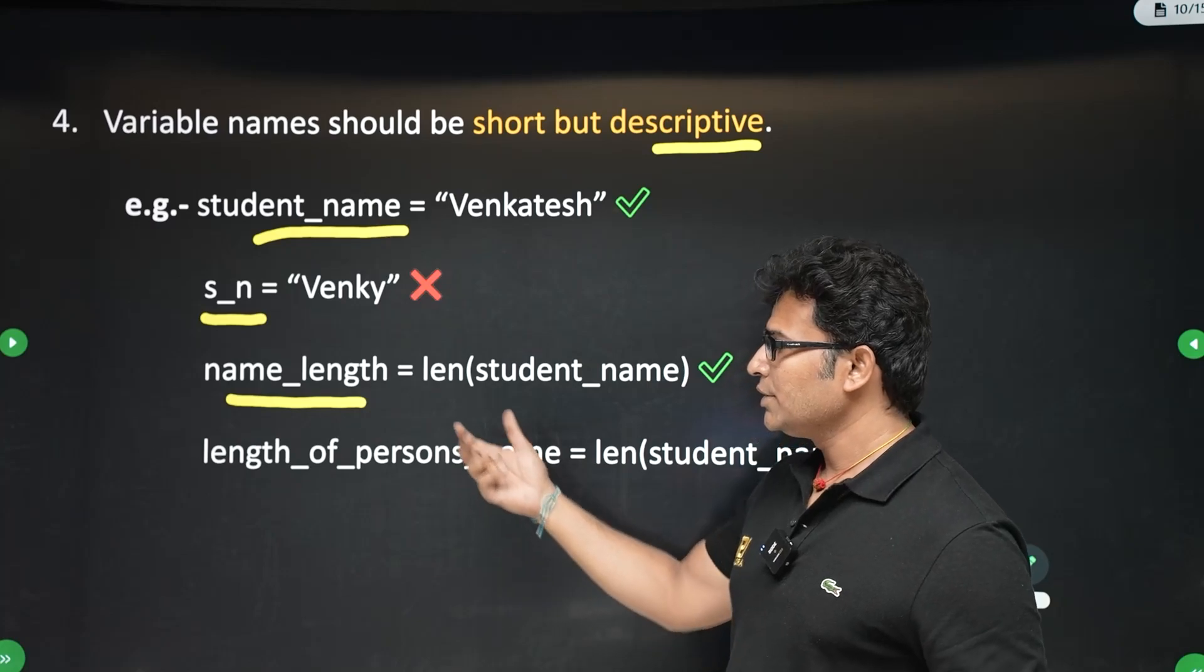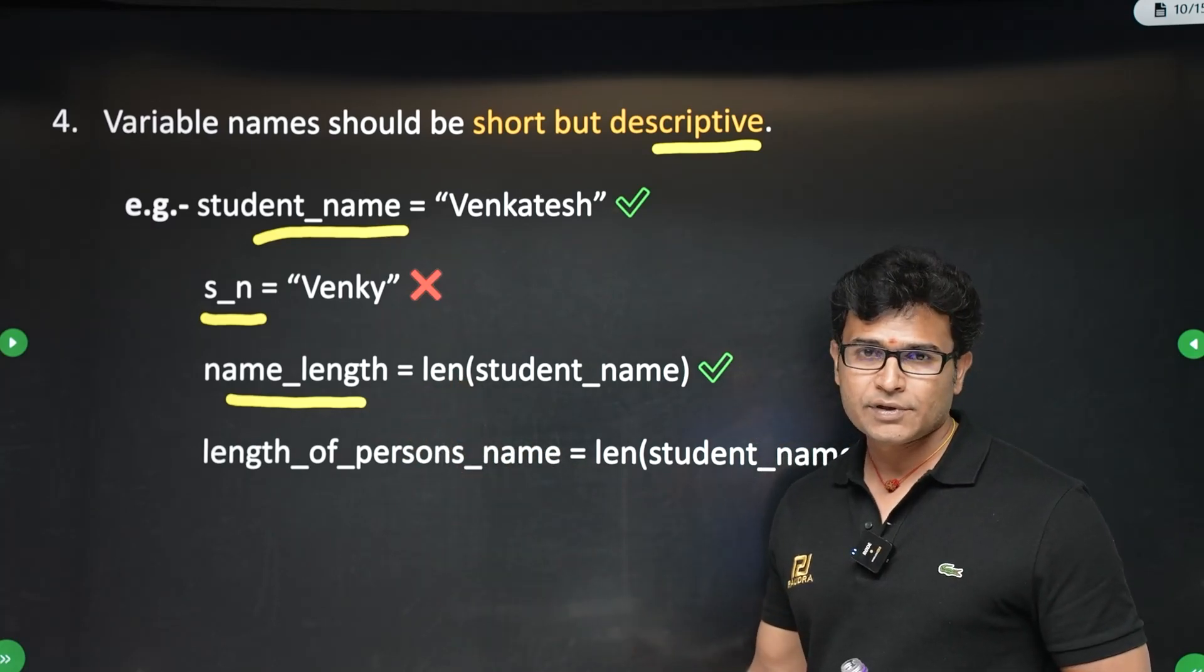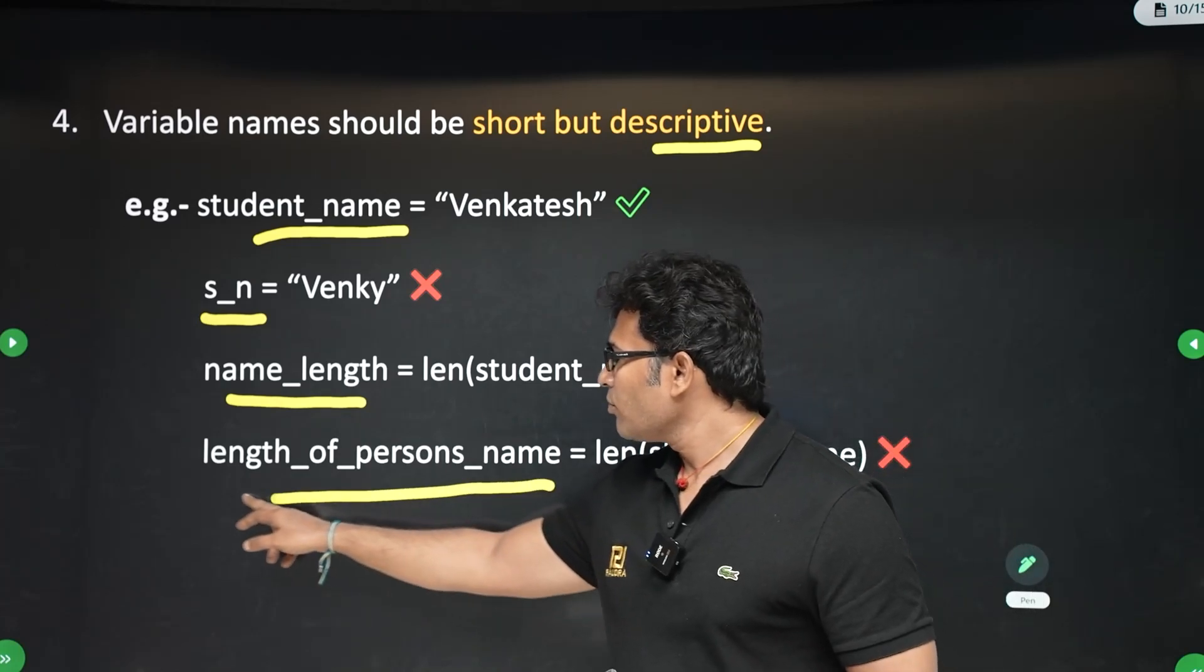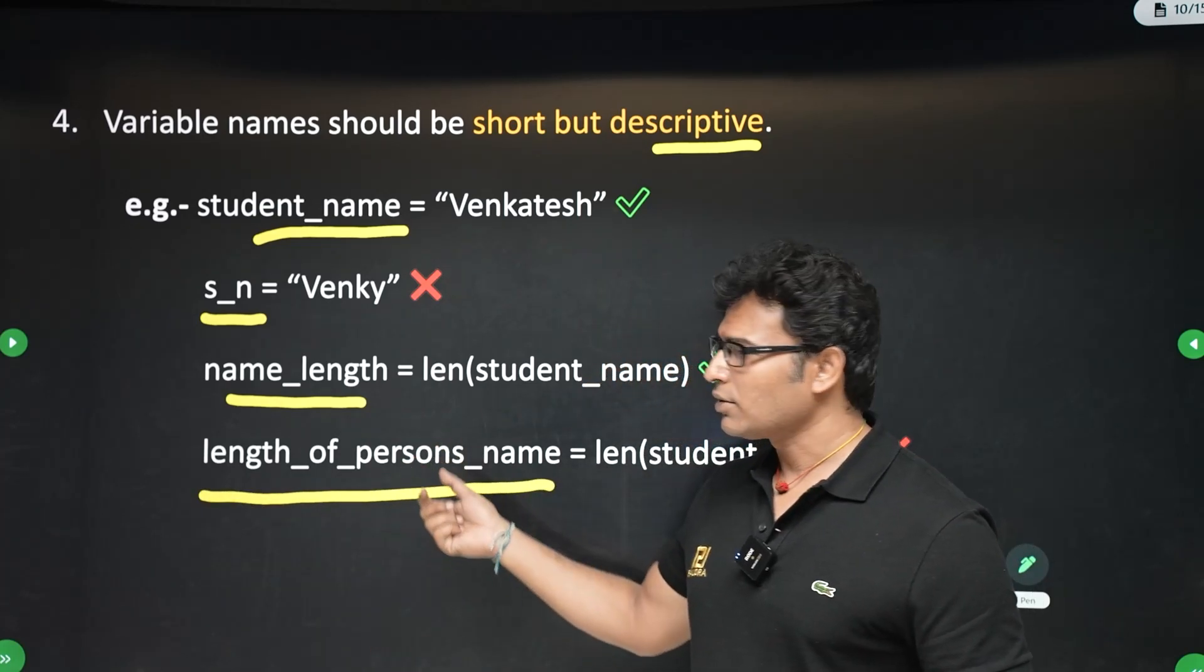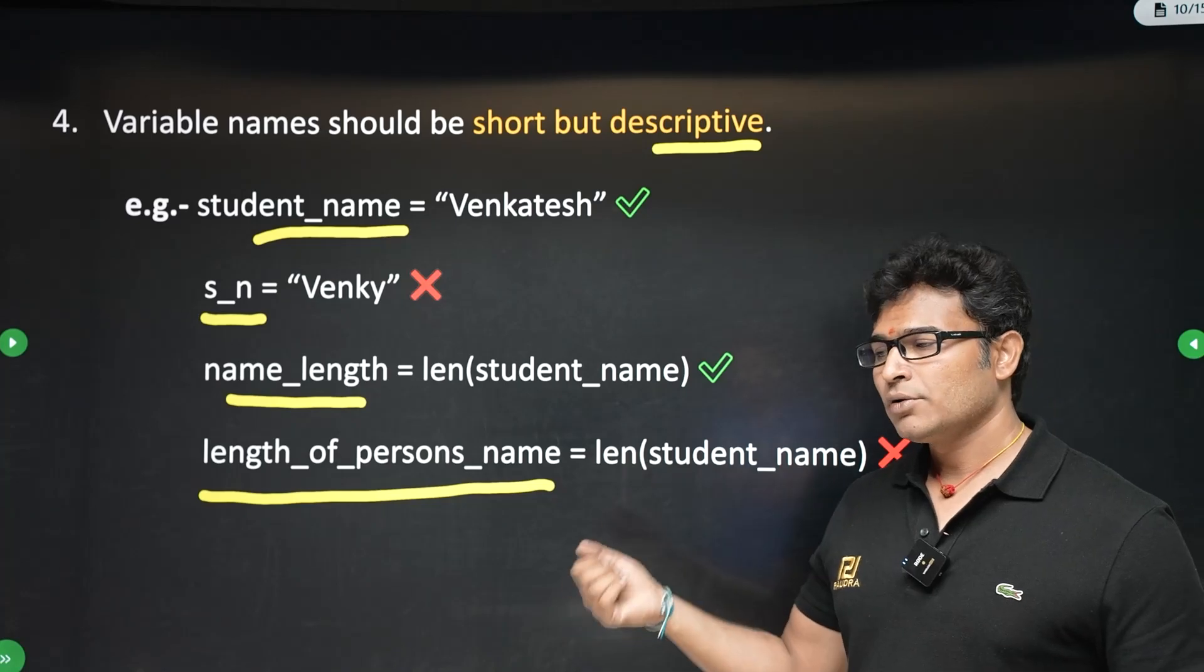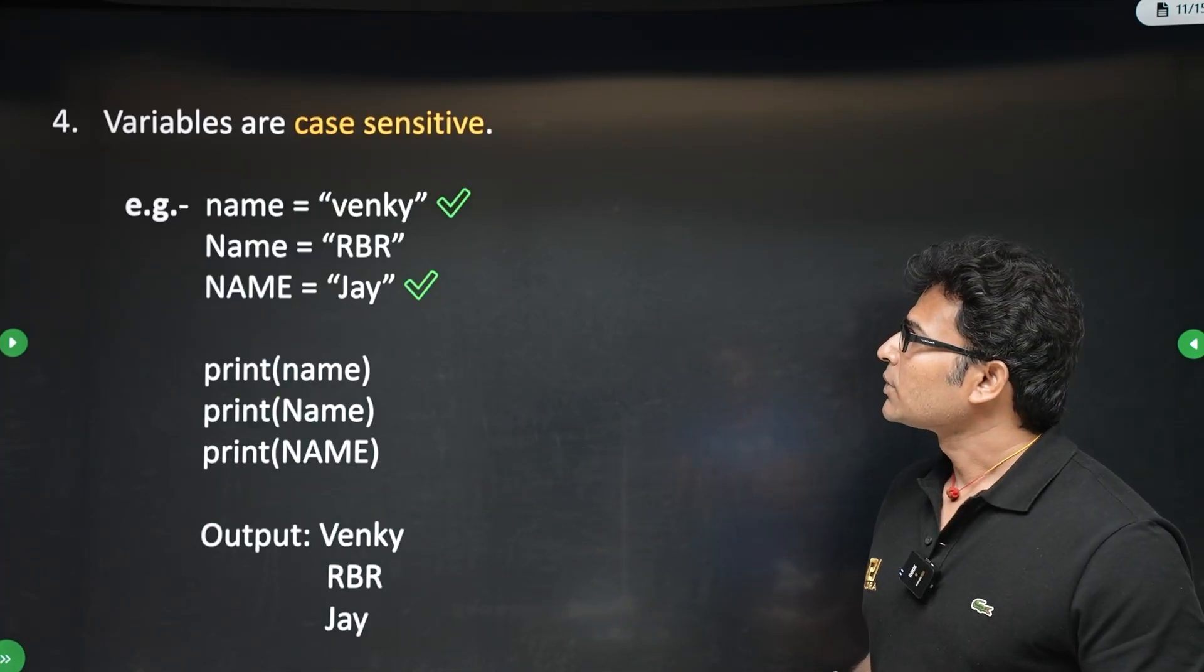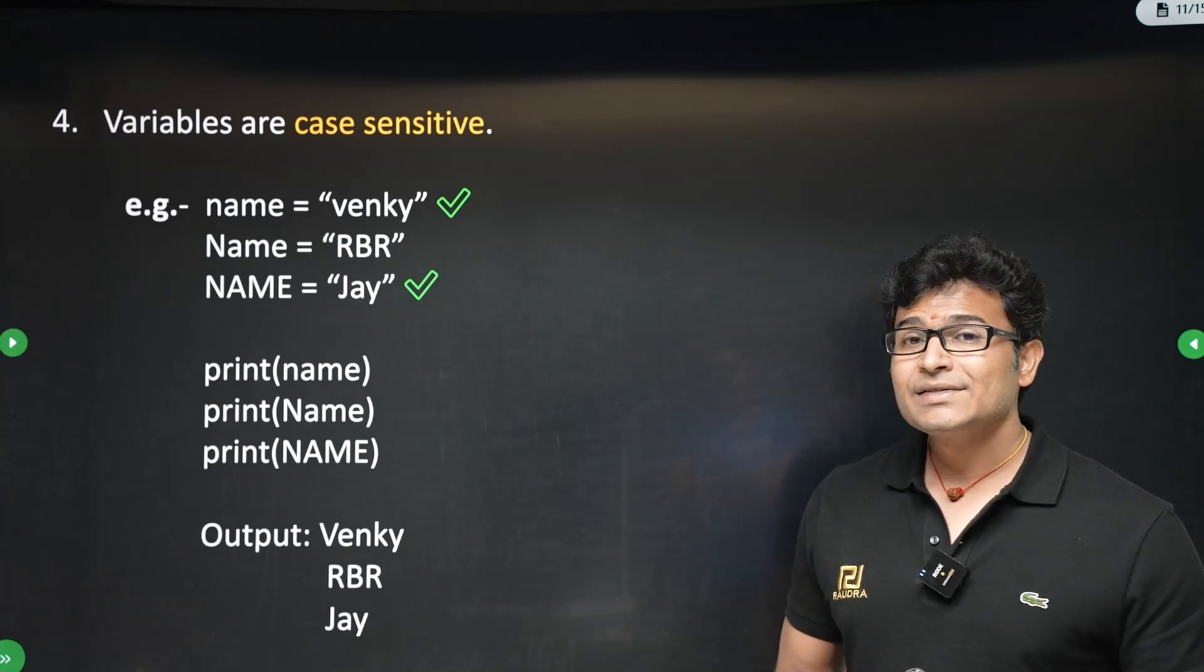Now, if you write student name as s_n, no one will understand what that is. That will create confusion later. You can definitely use s_n, but don't use it because that will create some confusion later on. And then name_length, it is fine. It is nothing but length of the name. Everyone is able to understand it. Now you should not say length_of_person's_name. This is too long. Your name should not be too long, too short. It should be descriptive and short.